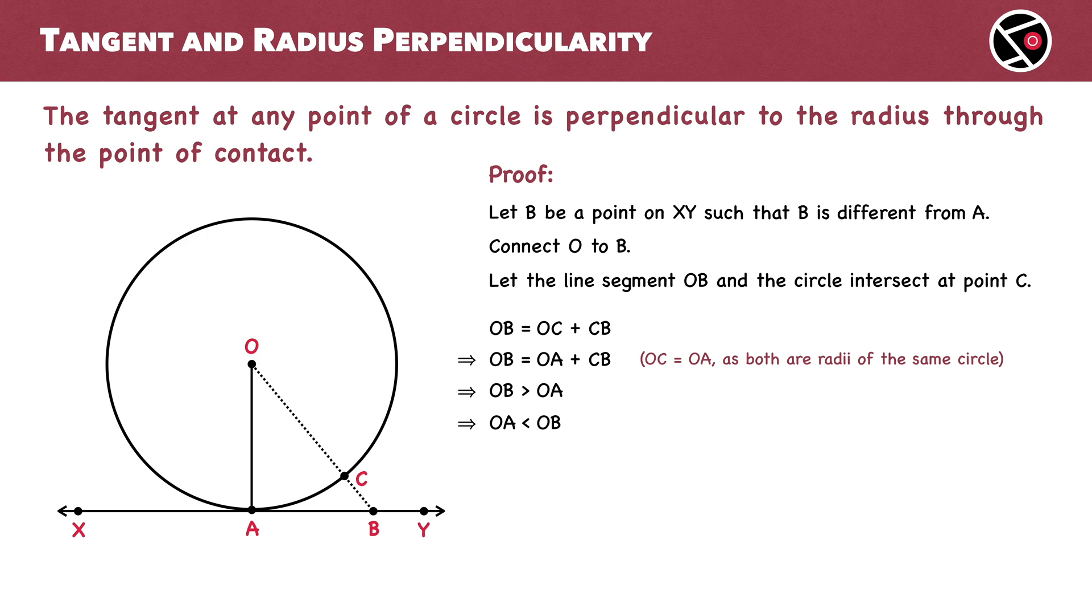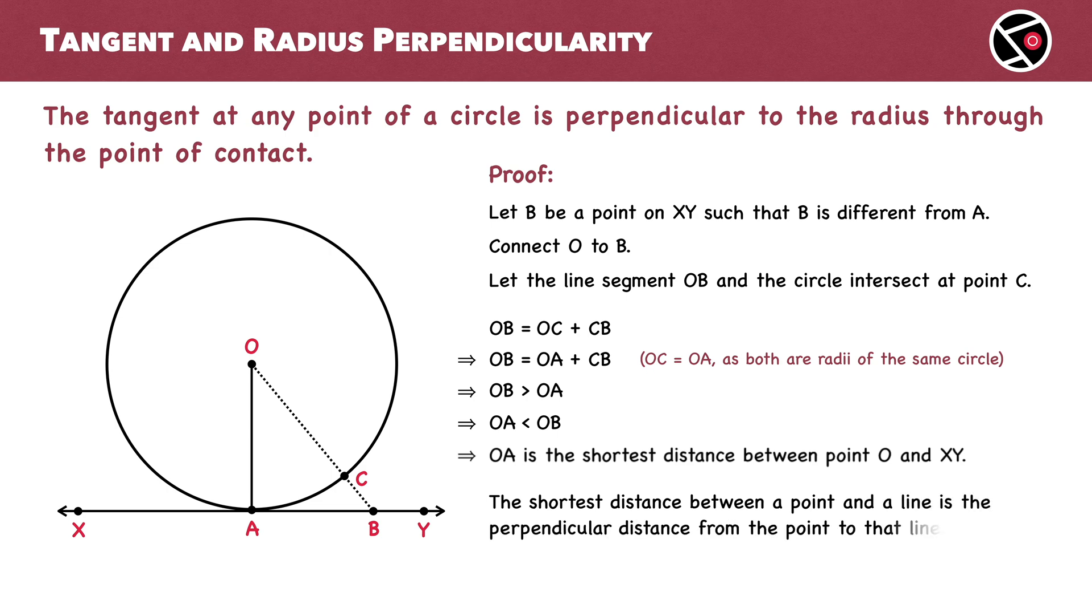Now pause for a moment and have a careful look at this expression. Remember, B can be any point on XY that is different from point A. This means for each of these possible points, OA will always be the shortest distance between O and tangent XY. And here is another key fact. The shortest distance from a point to a line is always the perpendicular distance.